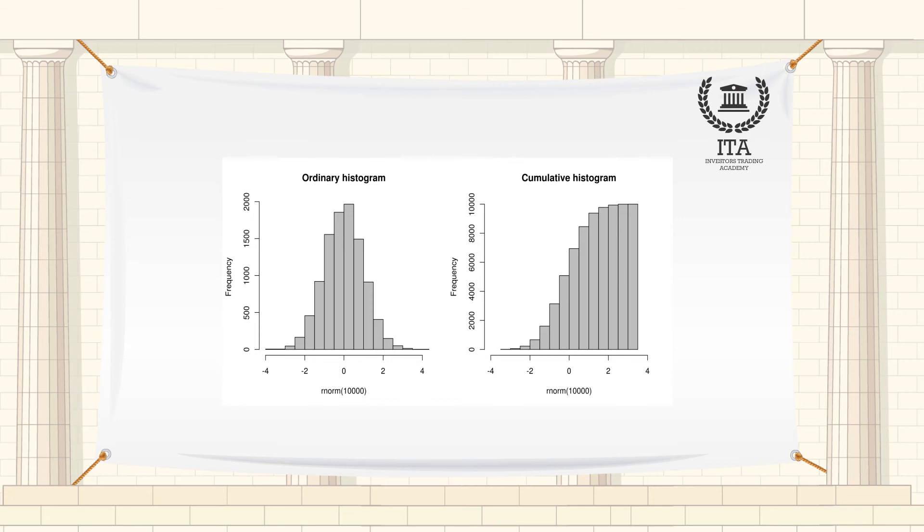If the length of the intervals on the x-axis is all 1, then a histogram is identical to the relative frequency plot.